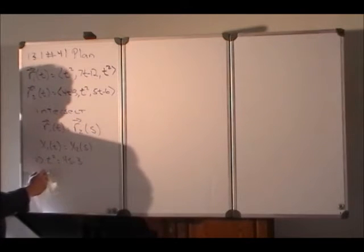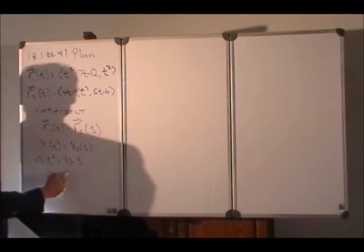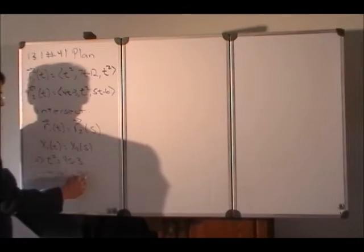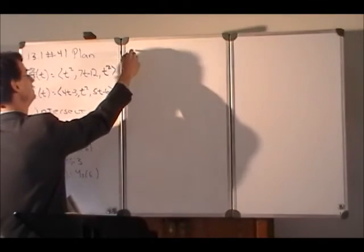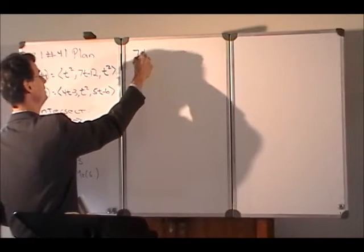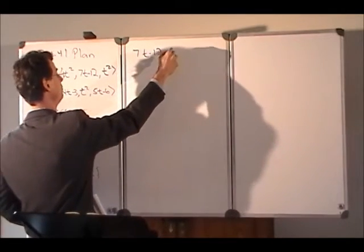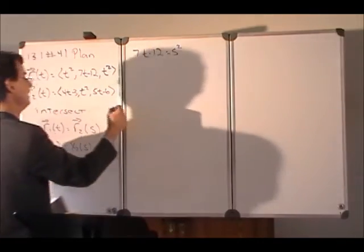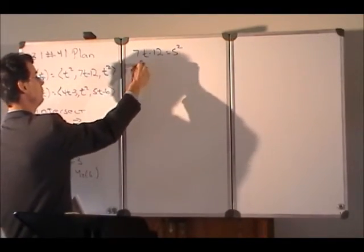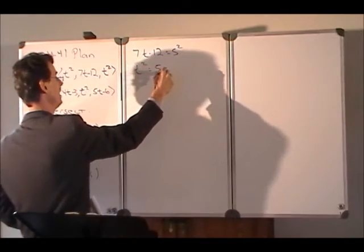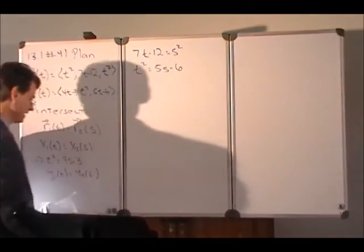And in a similar fashion, we could set y1 of t equal to y2 of s, and go forward from there. So what that would be is 7t minus 12 equals s squared. And then the third equation would be, from the z components, t squared equals 5s minus 6.